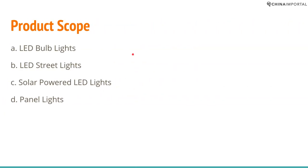Now, product scope. Every supplier is unique — or at least sometimes unique — meaning you can't just go on Alibaba and expect to find suppliers making anything LED. It doesn't work like that. Some suppliers make bulb lights, some make spotlights, or bulb lights and spotlights combined.